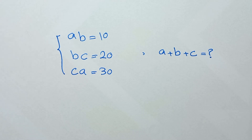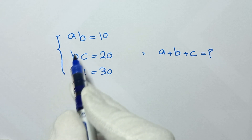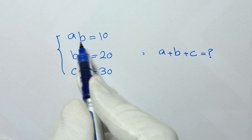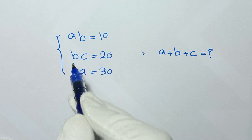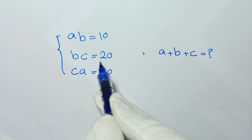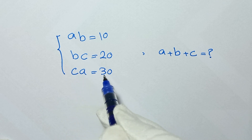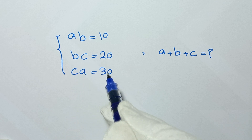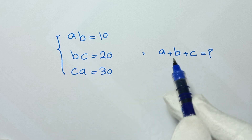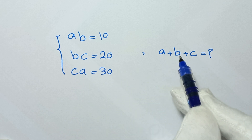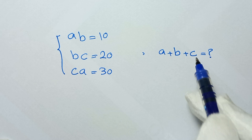Hello my friends, you're welcome to solve this problem: AB equals 10, BC equals 20, CA equals 30. Find the value of A plus B plus C.